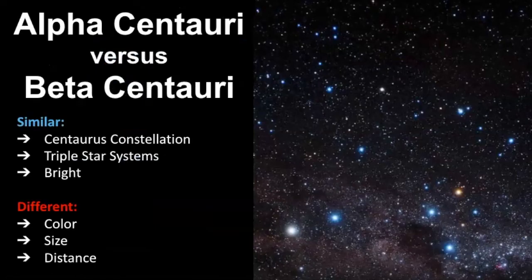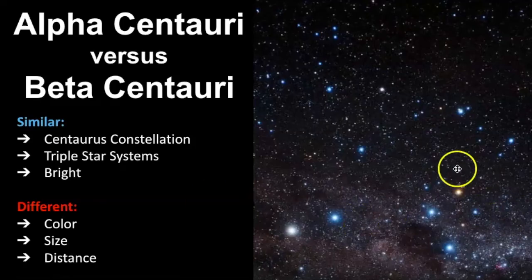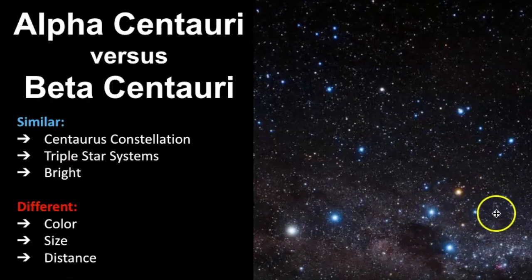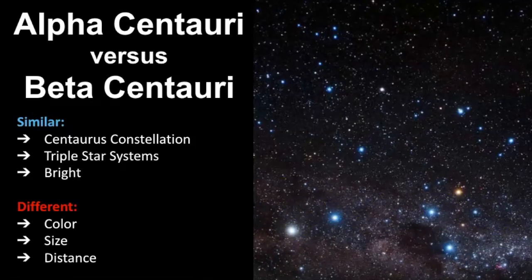To wrap up: Alpha Centauri and Beta Centauri are very easy stars to spot. If you happen to be in an area with a latitude of 20 degrees north and below, or if you live in the Southern Hemisphere, you can definitely see these two stars. The best way to find them is using the Southern Cross — use this portion of the cross, draw an imaginary line across the sky, and you should find them.